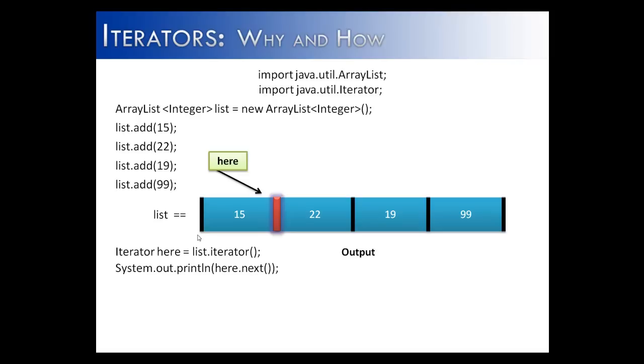And what next does is it moves the iterator from this position to after the first element in the ArrayList, or the first element in the data structure. And so what that's going to output is the number before it. Next is of course going to go after the 22, but then it will print the preceding data element.